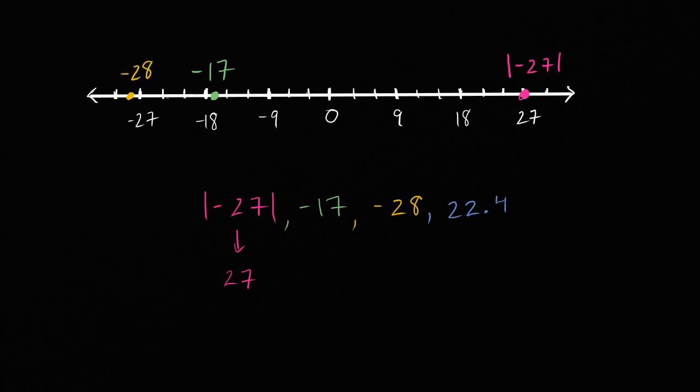And then finally we have 22.4. So let's see, we have 18, 21, 22 would be here. So 22.4 is going to be roughly right over there. So that is 22.4.